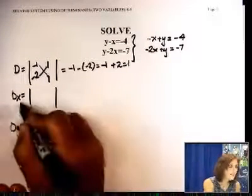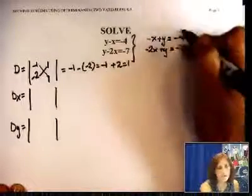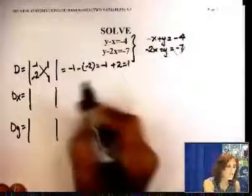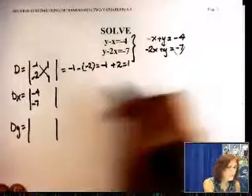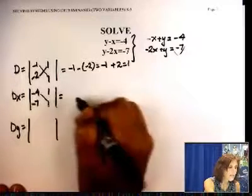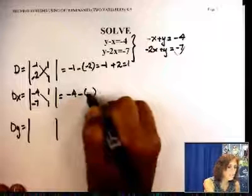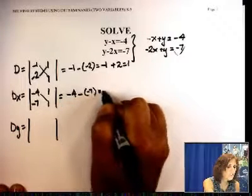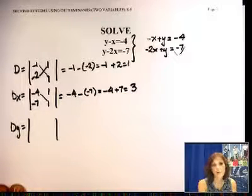Now Dx, on the other hand, what do I do? In the x column, I'm supposed to write the constant. So it's negative 4, negative 7, and the y column stays the same. So let's write that, cross-multiply, negative 4 minus 1 times negative 7, which is the same as negative 4 plus 7, which is 3. Very good.